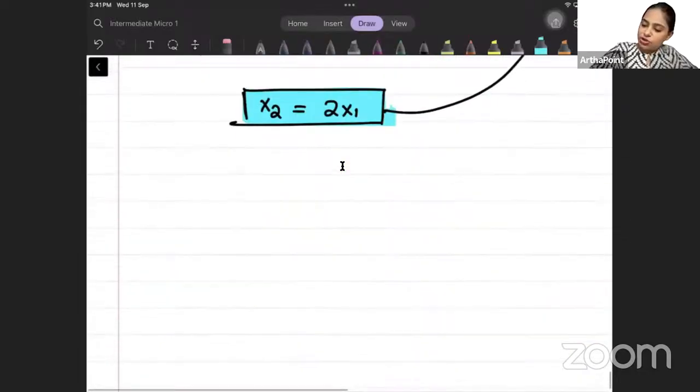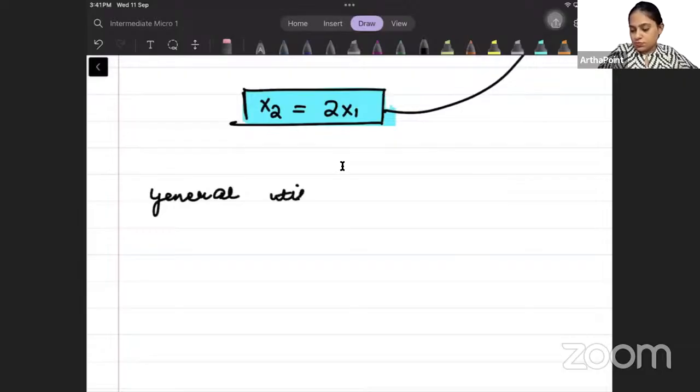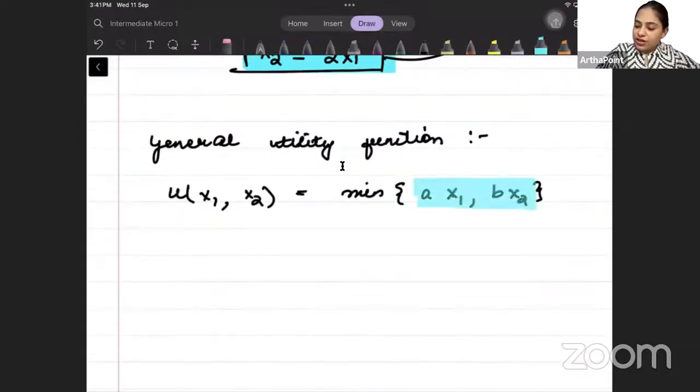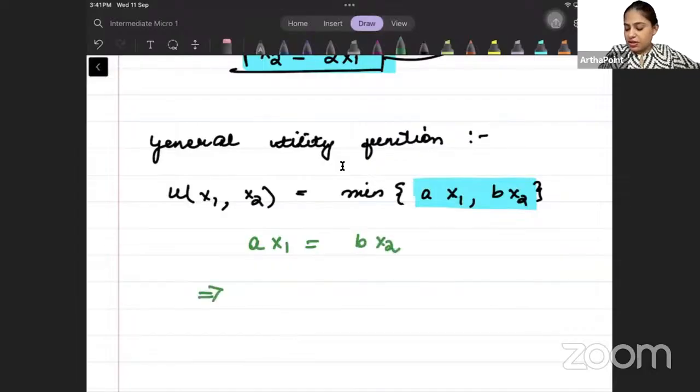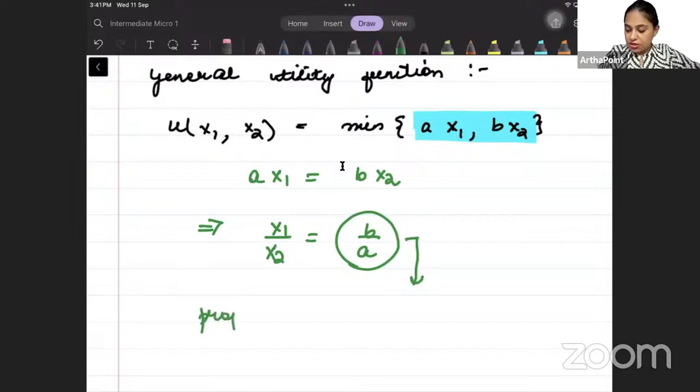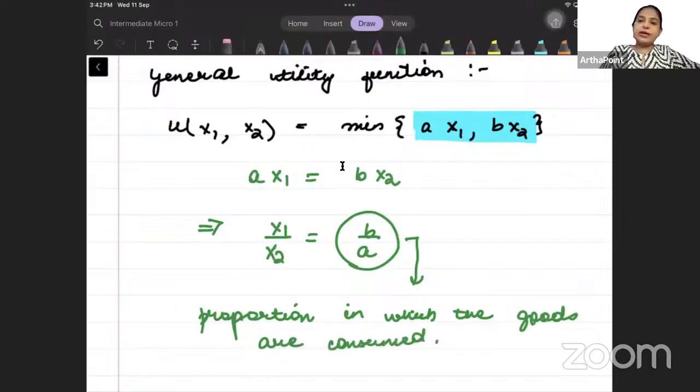So what is the general utility function now? The general utility function is min of ax1 comma bx2. We equate whatever comes inside the min. So we will say ax1 is equal to bx2. So x1 by x2 will be b by a. So b and a, what do they represent? They represent the proportion in which the goods are consumed. Two goods, in what ratio they are consumed, that proportion.